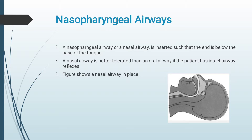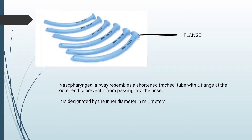Nasopharyngeal airways. A nasopharyngeal airway or nasal airway is inserted such that the end is below the base of the tongue. A nasal airway is better tolerated than an oral airway if the patient has intact airway reflexes. The image shows a nasal airway in place. A nasopharyngeal airway resembles a shortened tracheal tube with a flange at the outer end to prevent it from passing into the nose. It is designated by the inner diameter in millimeters.